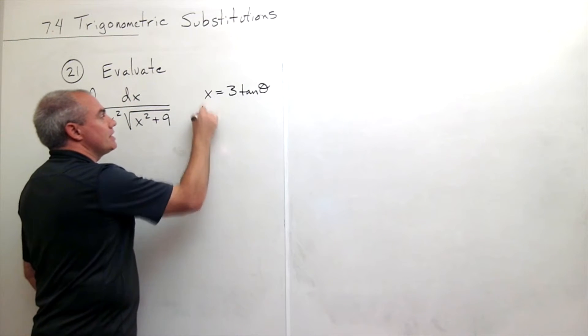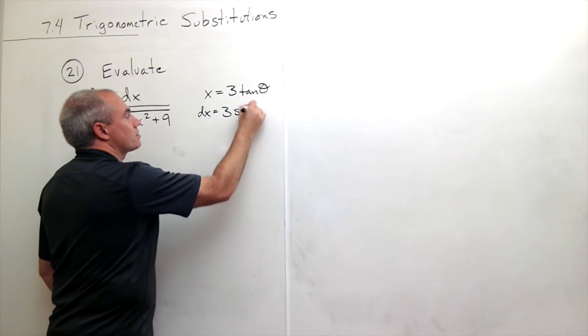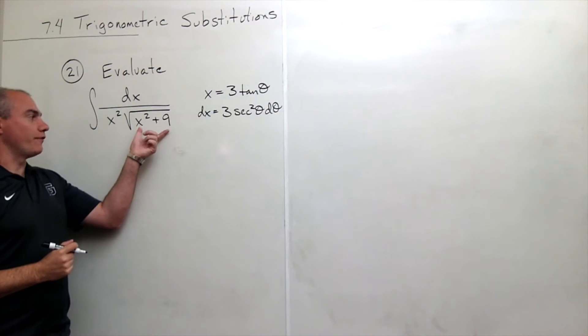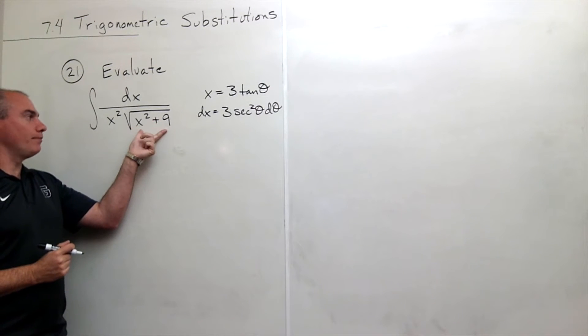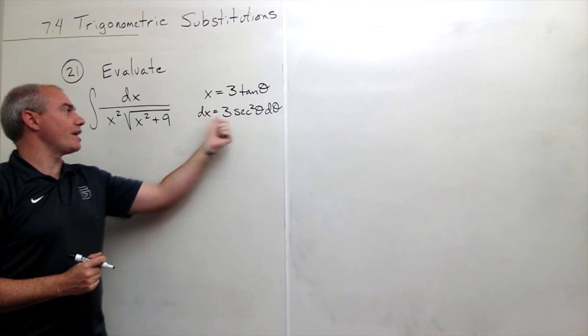So if this is x, dx is 3 secant squared theta d theta. So the first thing I did is, what's the form? Then I put in the appropriate substitution, find out what dx is.